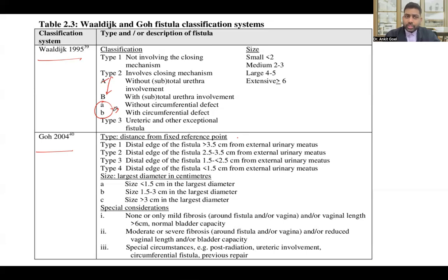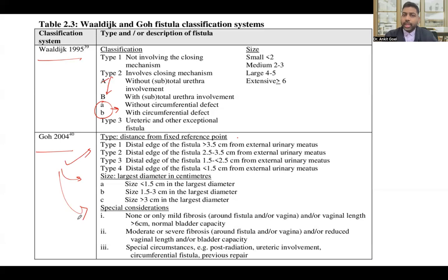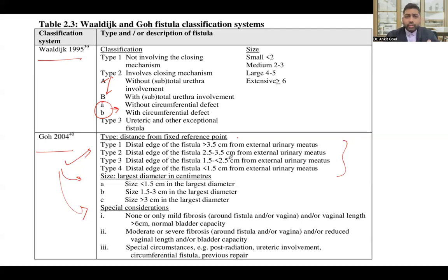GOES modified the classification and included three important components. The first component is the distance — the distance of the fistula from the ureteral meatus. This is a component that VALDI already addressed in terms of the closing mechanism, but GOES included it in a more descriptive way with the exact distance. The closer the fistula is to the urethra, the less likely continence will be maintained, making outcomes more challenging.